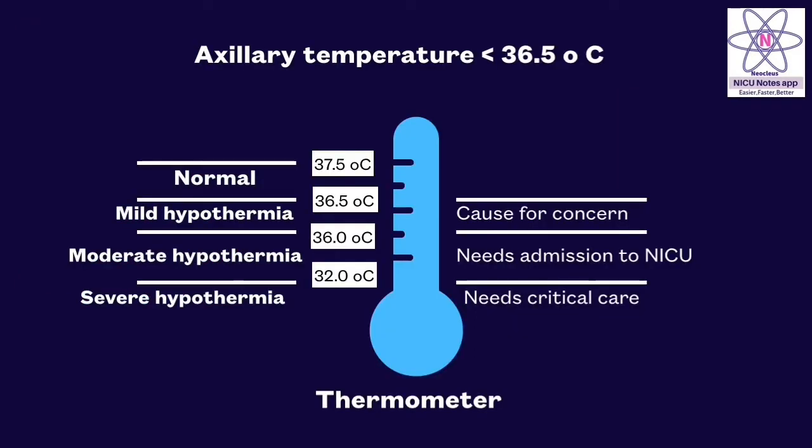Axillary temperature less than 36.5 is called hypothermia and less than 32 degrees is severe hypothermia which requires critical care in the NICU.